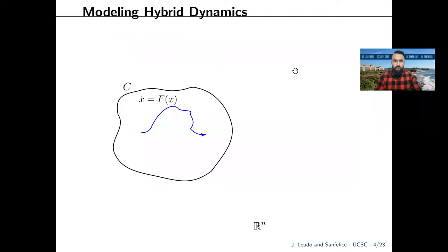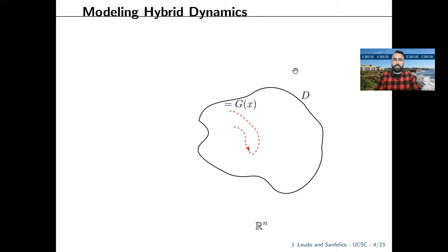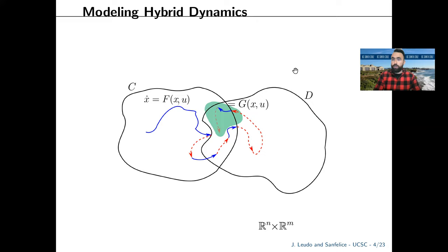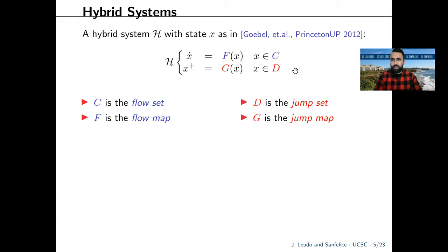Using the framework by Goble, San Felice, and Thiel, trajectories can evolve in a continuous way when the state is found in a set C, and in a discrete way when the state is found in a set D. When these two sets overlap, the trajectories evolve hybridly. We are interested in the case in which there are inputs affecting the evolution of the trajectory.